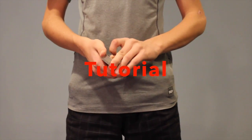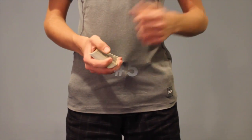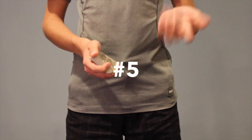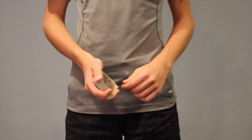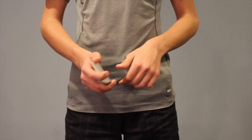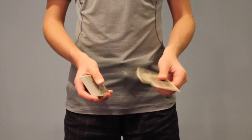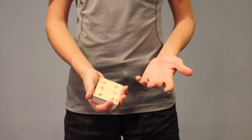Okay guys, for the fifth color change on my list, it is called the double lift color change, I guess you could call it. Basically, it's just using the double lift, and if you don't know what that is, it's turning two cards over as one, like so.